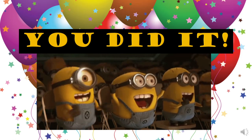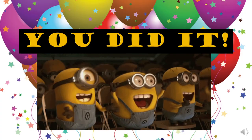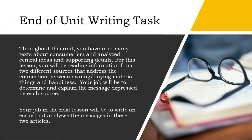Okay, now calm down for a bit because there is still work to do. Here is your end of unit writing task. Throughout this unit, you have read many texts about consumerism and analyzed central ideas and supporting details. For this lesson, you will be reading information from two different sources that address the connection between owning and buying material things and happiness. Your job will be to determine and explain the message expressed by each source, and in the next lesson, write an essay that analyzes the messages in these two articles.